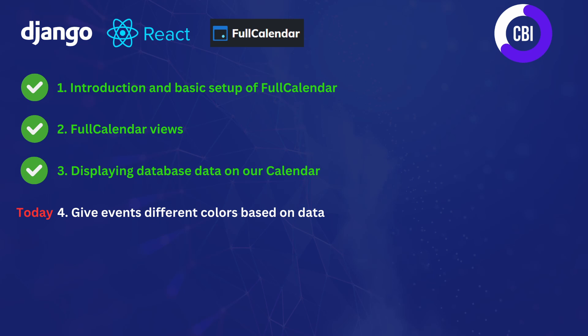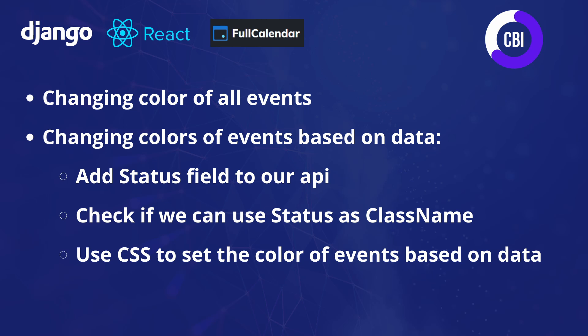In this video, we're going to continue and make sure that we can change the colors of the events in our Full Calendar, so that events with different statuses are displayed in different colors. To do that, we're going to be following five steps.